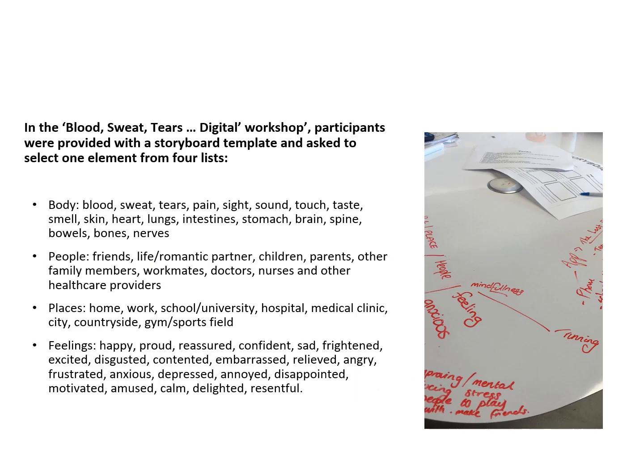In the Blood, Sweat, Tears digital workshop, participants were provided with a storyboard template and asked to select one element from four lists: aspects of the body, aspects to do with people, different places, and different feelings. Each group chose one element from these four lists and then worked together to conceptualise a new digital health device.